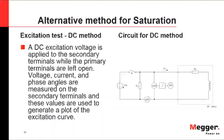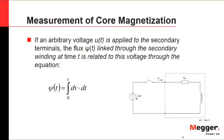For this DC alternative saturation method, by applying a DC signal we integrate the voltage as a function of time, which is reflected as flux as a function of time. We then look at the saturation curve as voltage-time versus excitation current. An arbitrary voltage is applied to the secondary terminals, and the flux linkage through the secondary winding at time t is related to this applied voltage according to the governing equation.